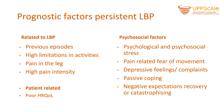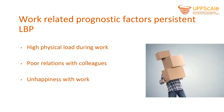In Caitlin's case, she had previous episodes of pain, quite high limitations in activities, no pain in the leg, but her pain intensity is quite high. Patient-related factors include poor health-related quality of life. Psychosocial factors include psychological and psychosocial stress, pain-related fear of movement — which we see in Caitlin — depressive feelings, past coping and negative expectations of recovery or catastrophizing. Work-related prognostic factors include high physical load during work, poor relations with colleagues and unhappiness with work.